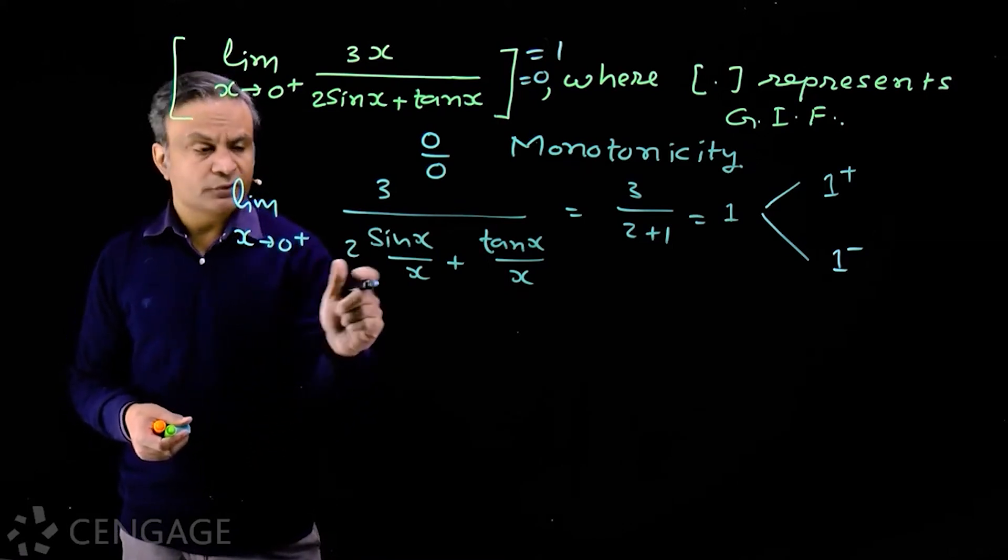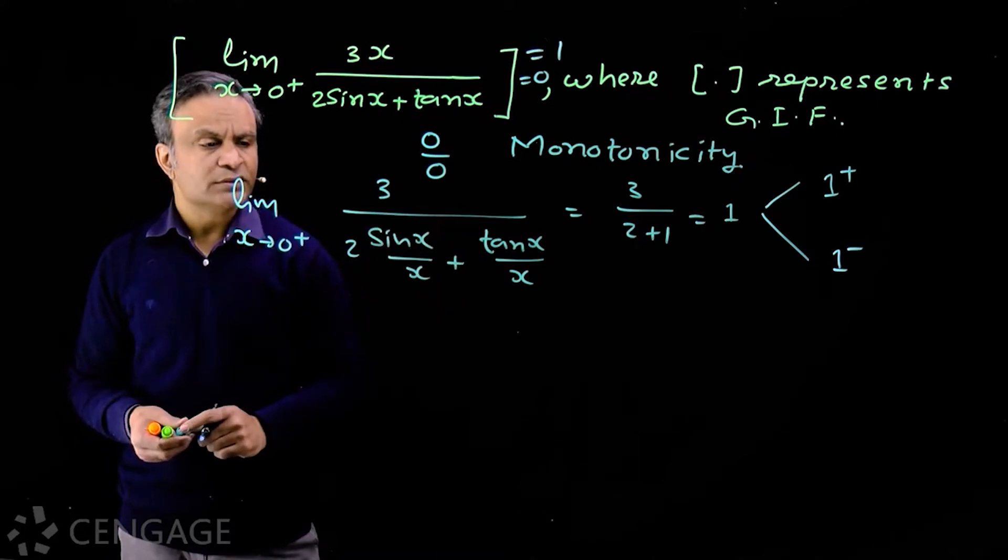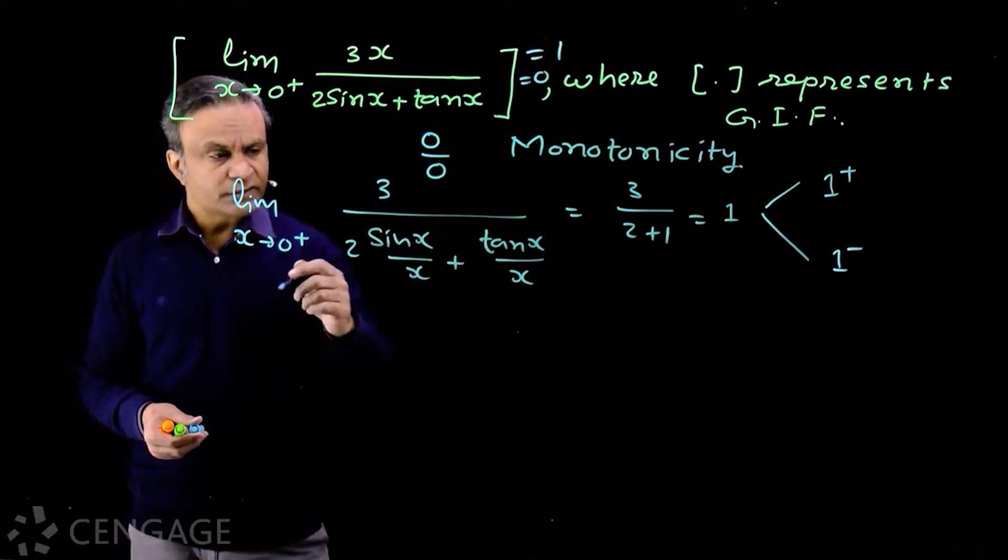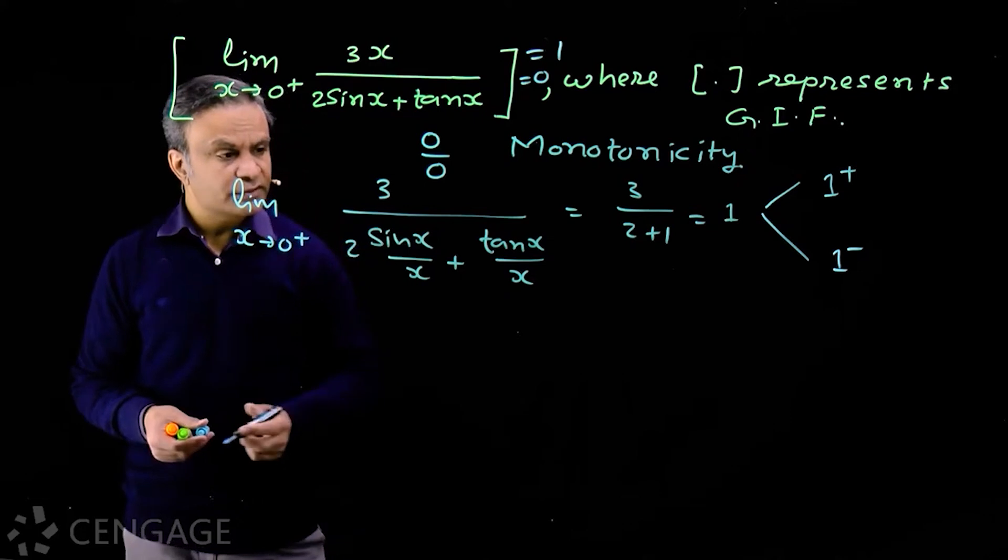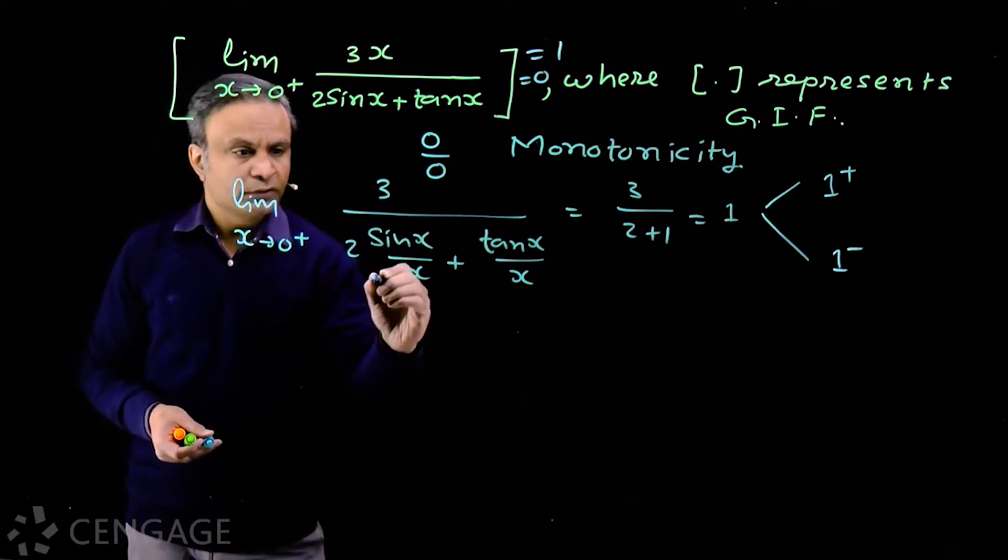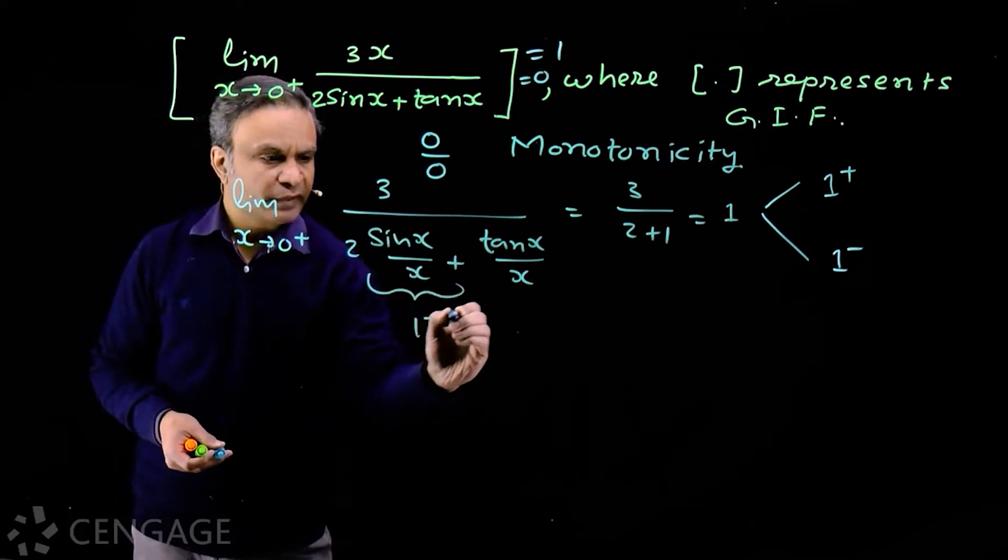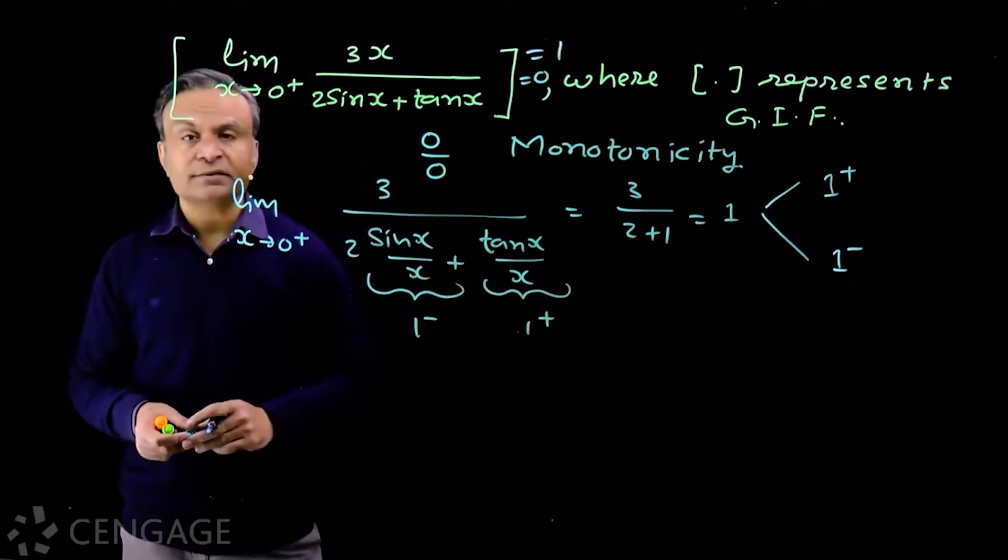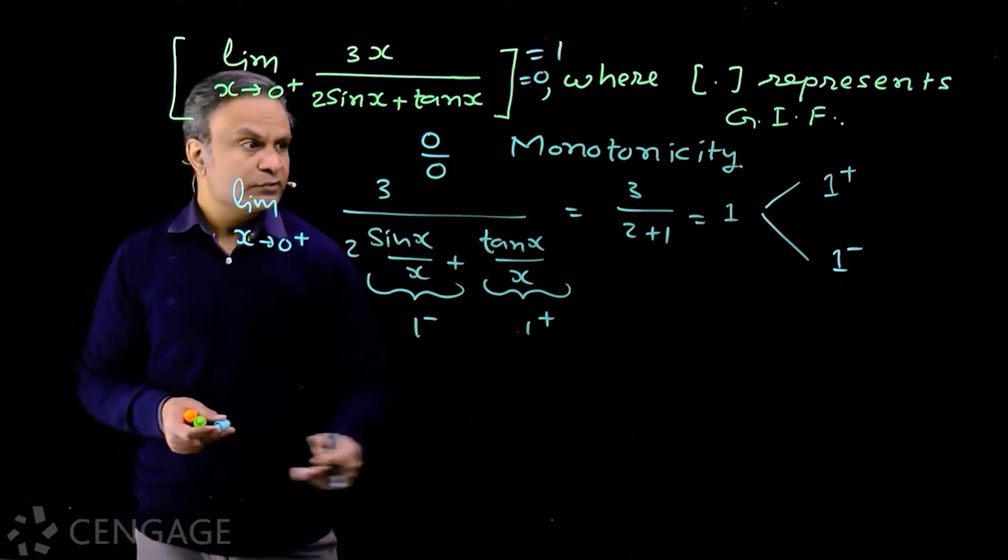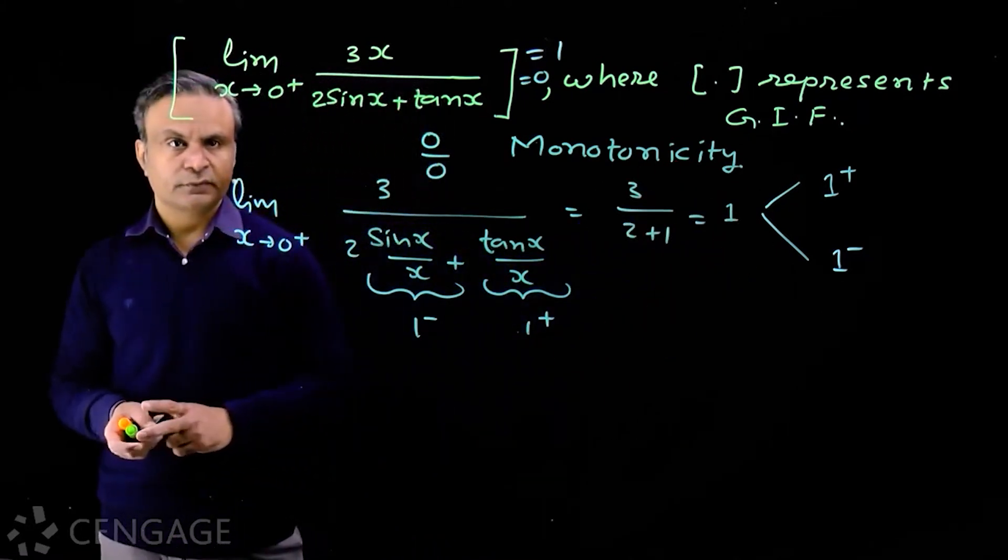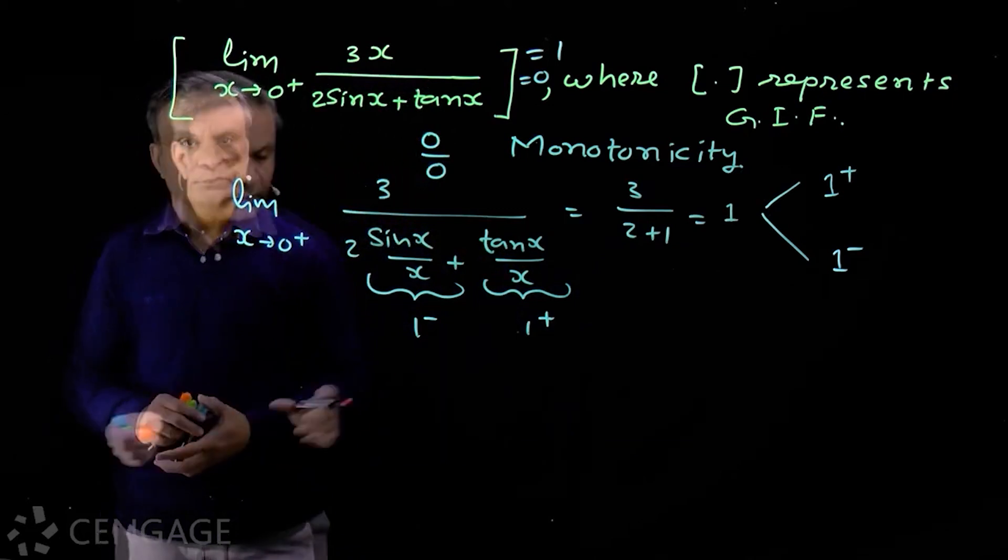Limit x tends to zero plus sine x over x is 1, but this value is slightly less than 1. And limit x tends to zero plus tan x upon x is 1, but this value is slightly more than 1. This value is 1- and this value is 1+, so denominator is either 3+ or 3-. So this value will be either 1+ or 1-. How to decide?